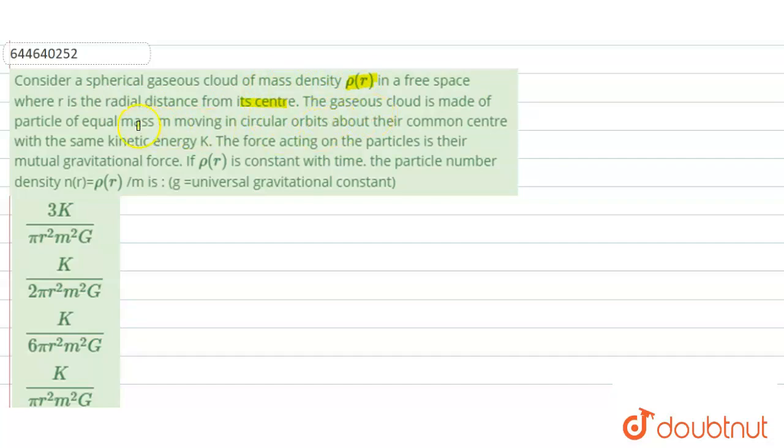The gaseous cloud is made up of particles of equal masses moving in circular orbits about their common center. So gaseous cloud has some particles of equal masses and they are moving in circular orbits around their common center with the same kinetic energy.